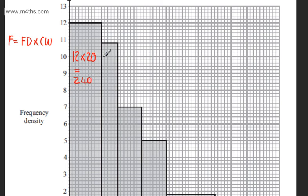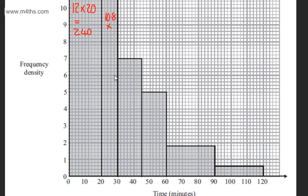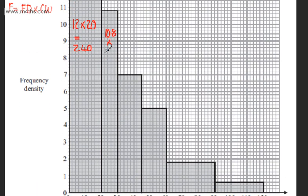If we look at the next one, this looks to be 10.8. So we're going to have 10.8 multiplied by the class width, which is going to be 10. So 10.8 times by 10 is going to give me 108.